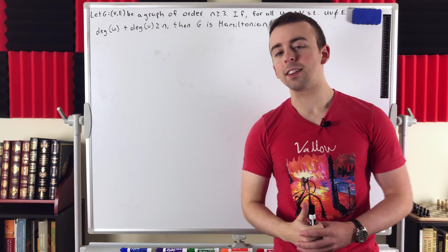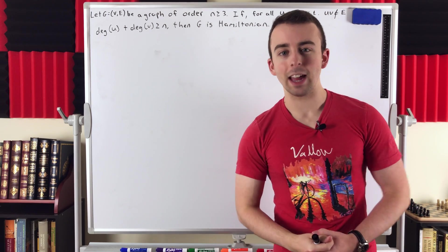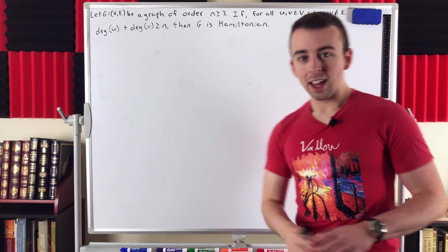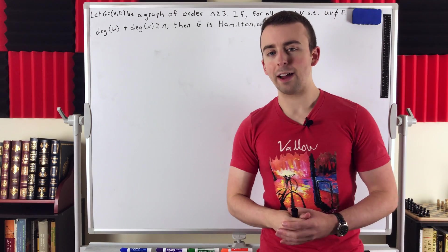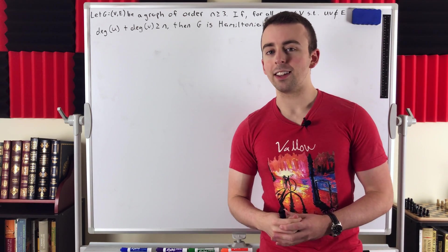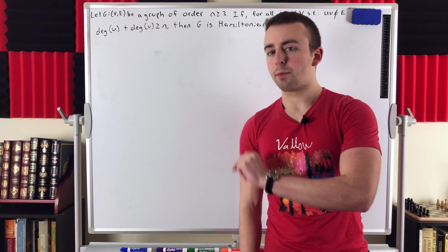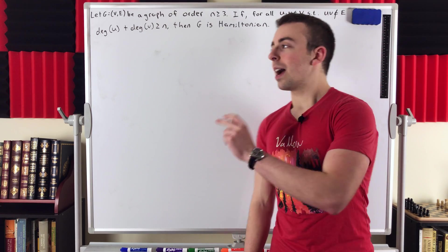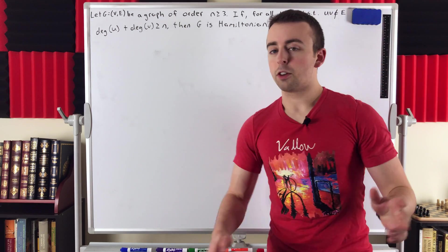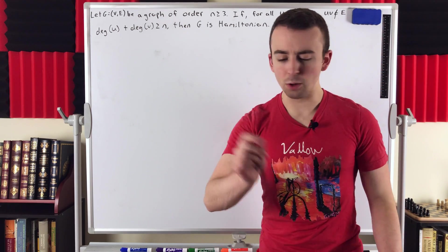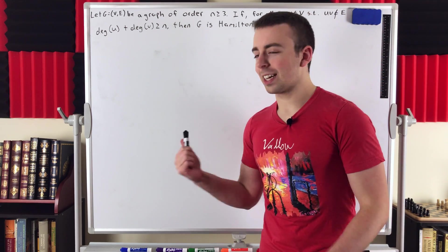If a graph doesn't meet this condition, then we still don't know — it may or may not be Hamiltonian. I'm not going to go through any examples of applying this theorem to a graph, because I think people usually like these proof videos to be as concise as possible. So we're going to go ahead and get into the proof. But if you haven't applied this theorem to a graph, I'd give it a try — do a little sketching, try applying the theorem.